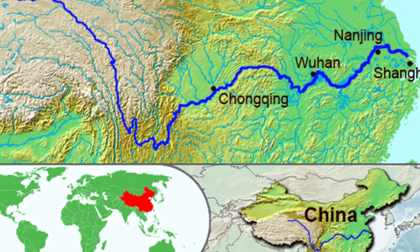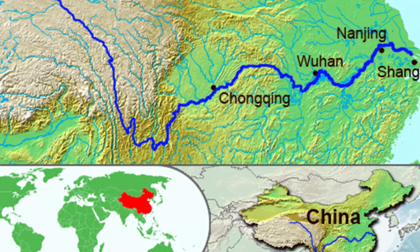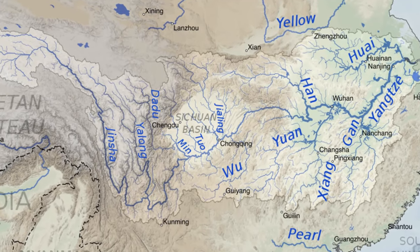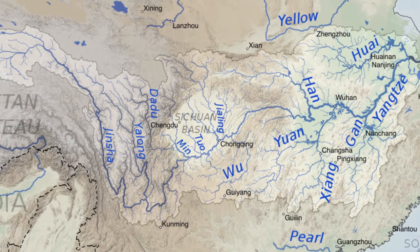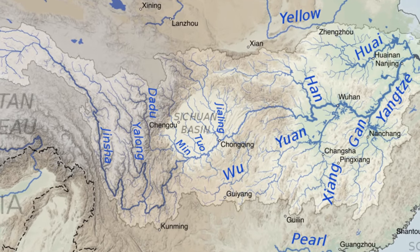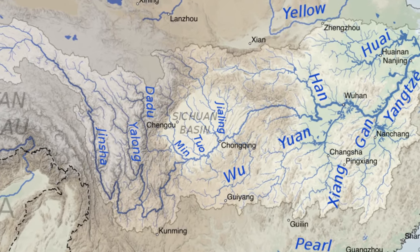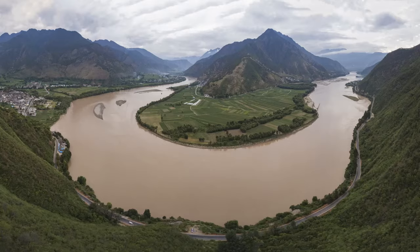This is the Yangtze River in China. It is about 6,300 km long. It is about 3 to 6 degrees. That is why it is about 10 megabri.